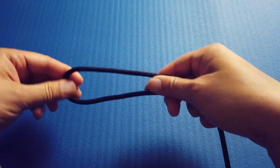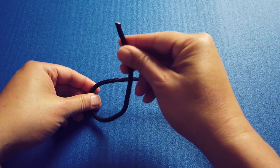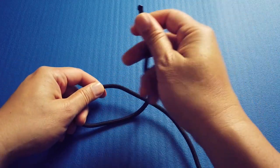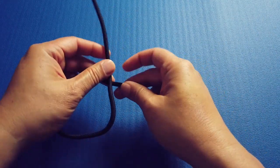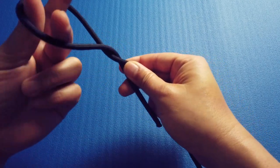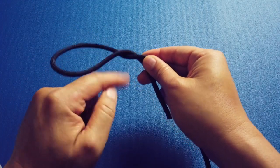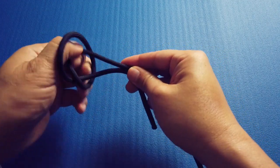You create a bight like so. Twist the working end over the bight one time. Then reach through the loop to pull the bight in. This piece right here. And there you go, instant slip knot.